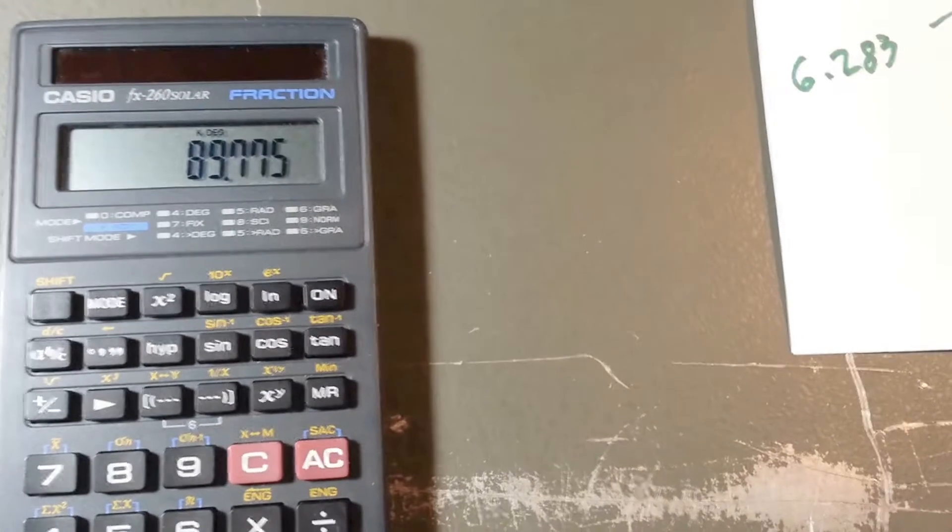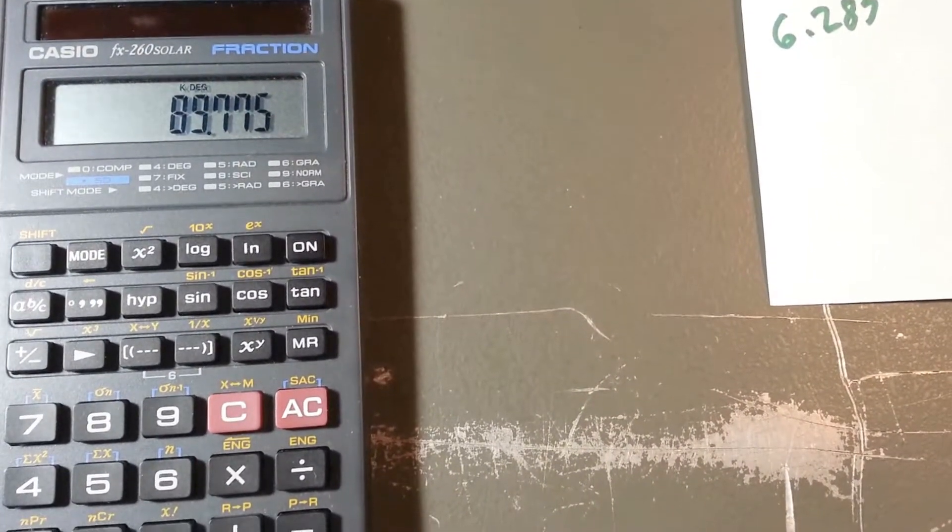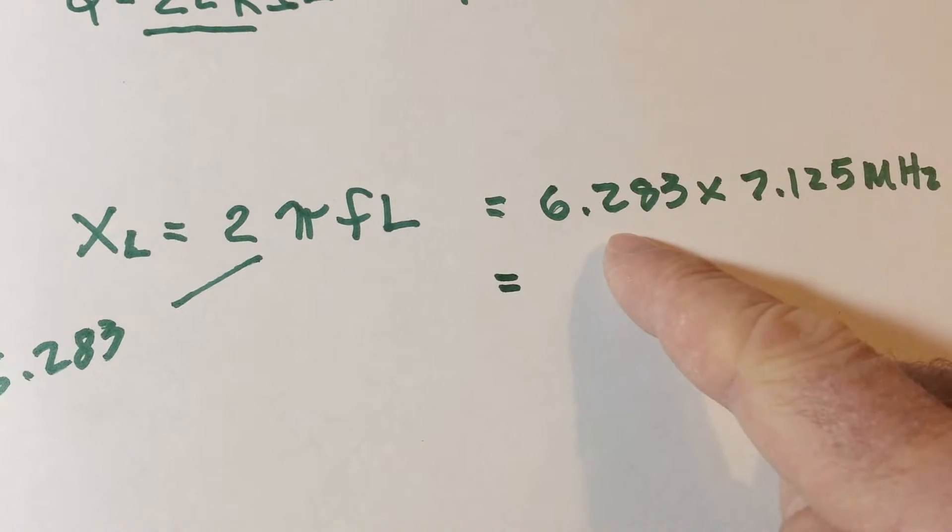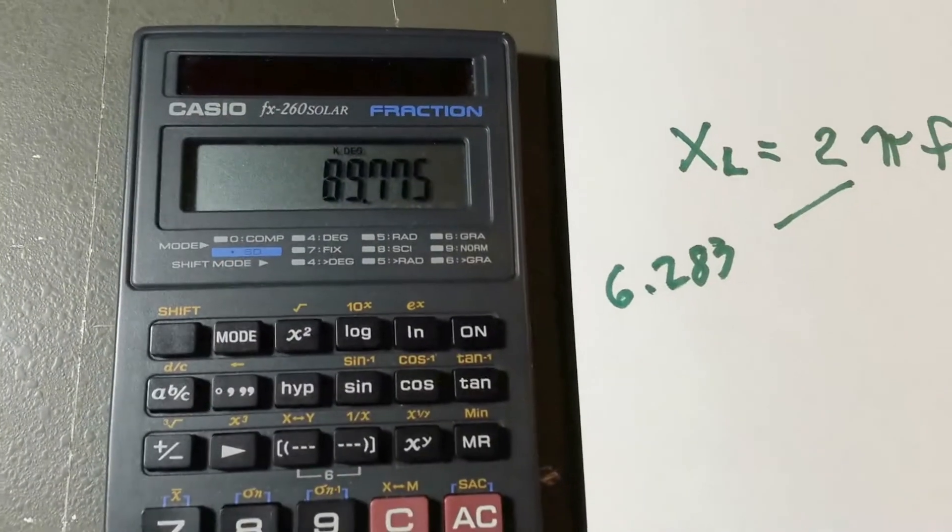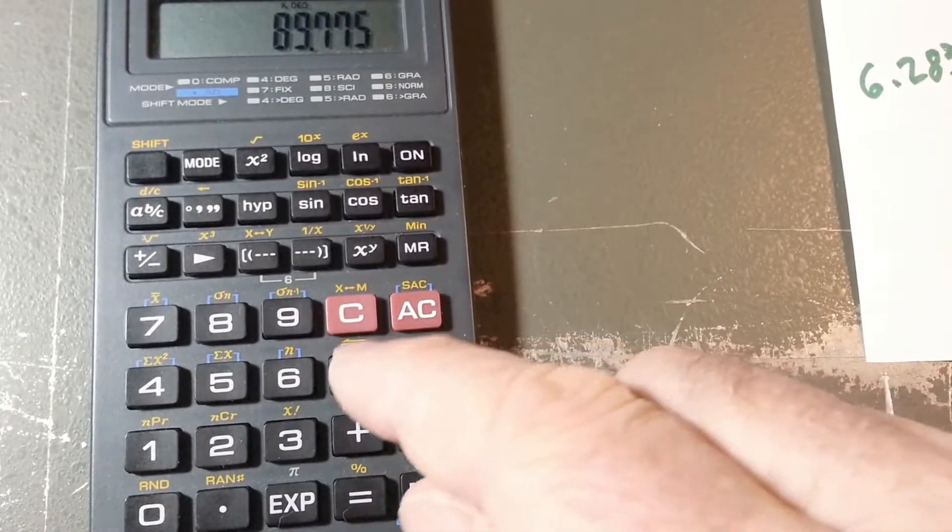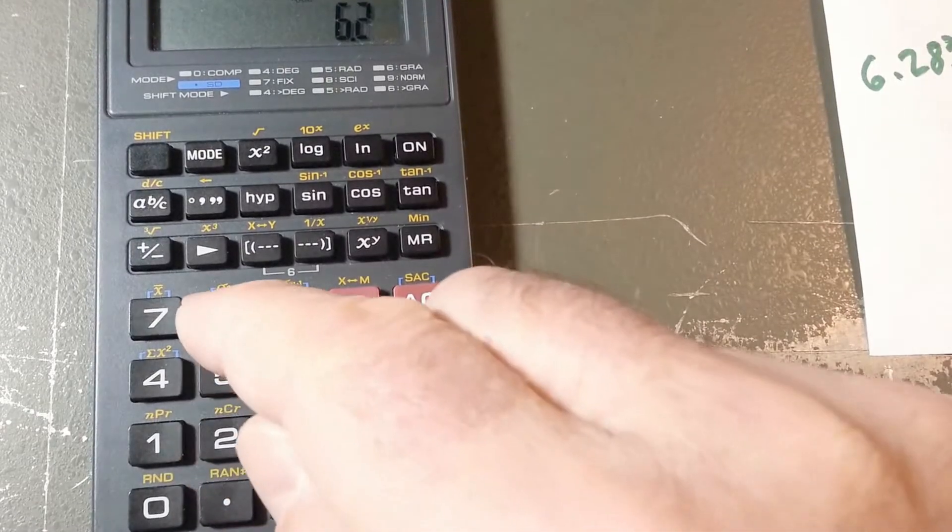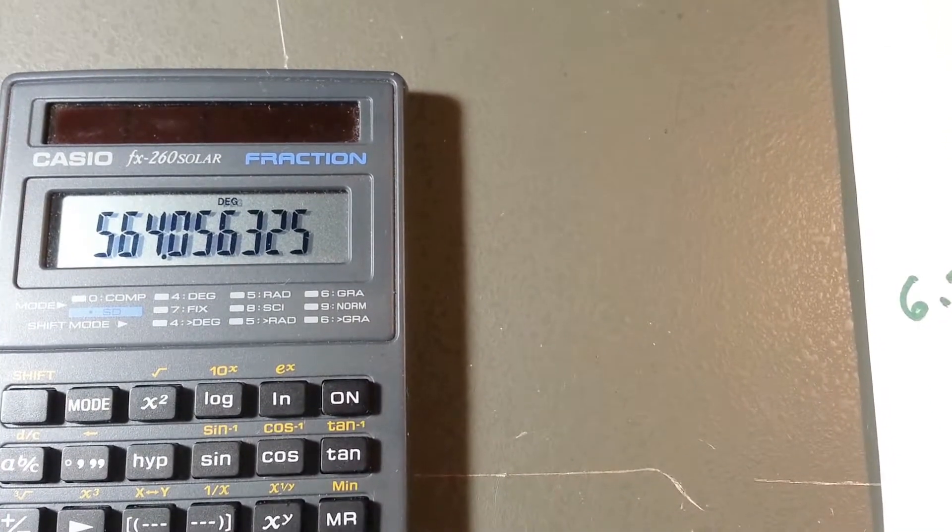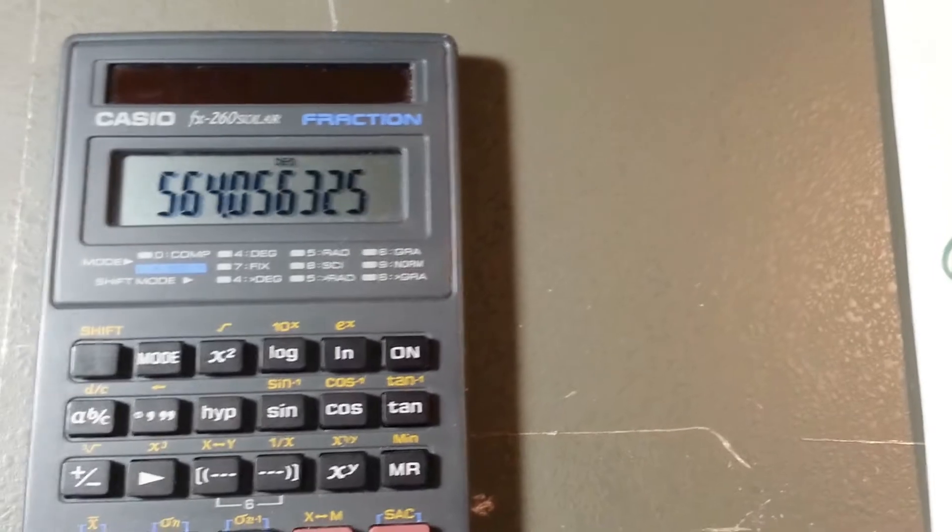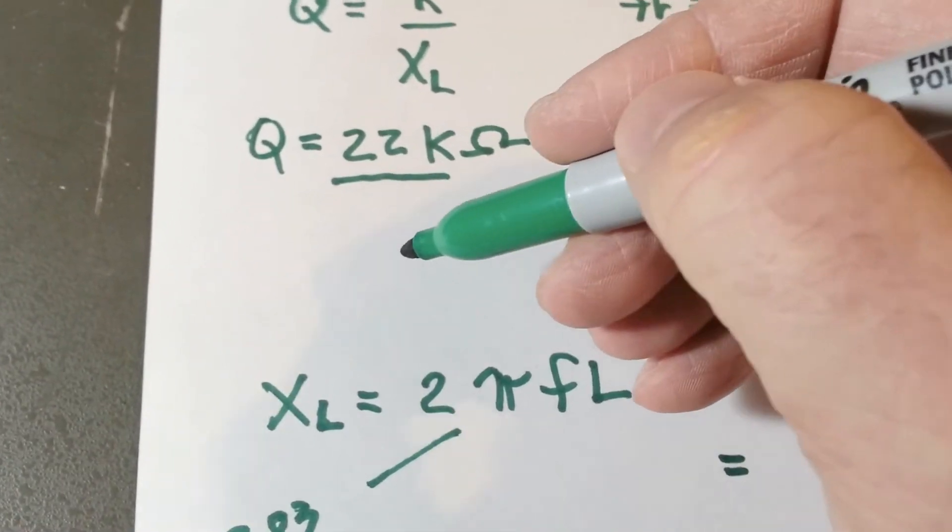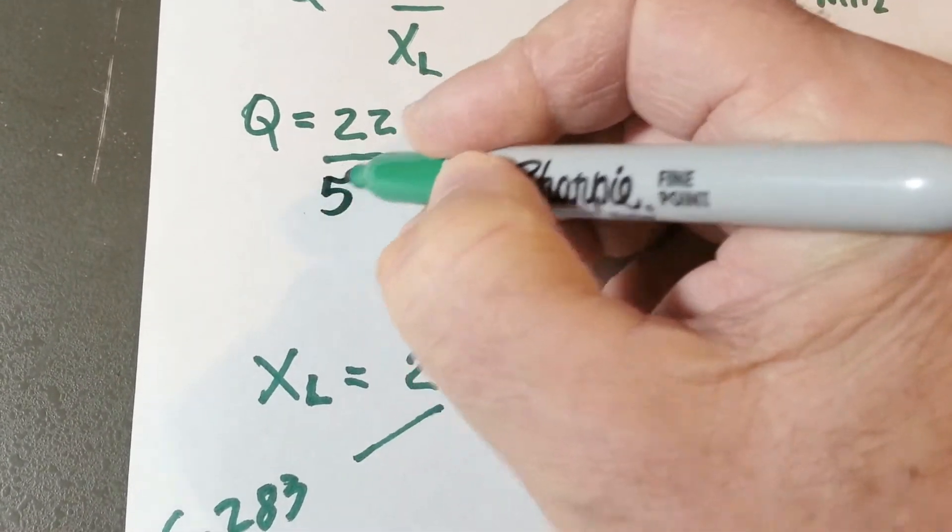All right, 89, so we got 89.775 there. And let's multiply that by 6.283, okay. I'm just moving this paper because the paper tends to make the calculator dark. Okay, so times 6.283, and we get 564.4 ohms. Okay, so we'll write that under here for our XL, 564.4.